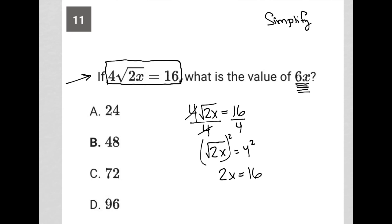And now, knowing that 2x is equal to 16, I can say, well, because the question is asking for 6x, what if I just multiplied both sides here by 3 so that my 2x is now 3 times 2x, which is 6x, and my 16 is now 16 times 3, which is 48.